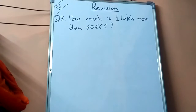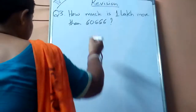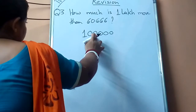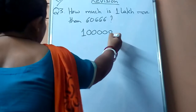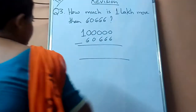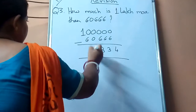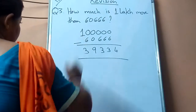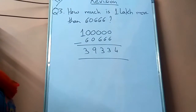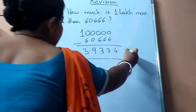Let's start this one. We have to subtract 60,666 from 1 lakh. 1 lakh means 1 followed by 5 zeros — 1, 10, 100, 1000, 10,000, and then lakh. Now subtract. When you are subtracting, this will be 4, 3, 3, 9 and 3. So the answer is 39,334. For this type of question you will not write a statement — directly subtract and write the answer.